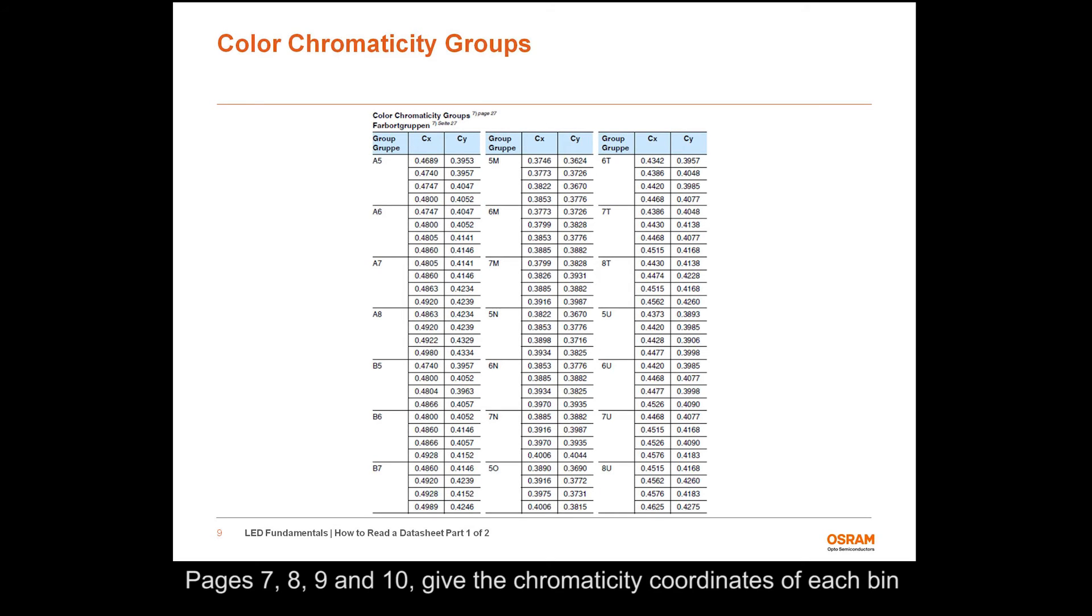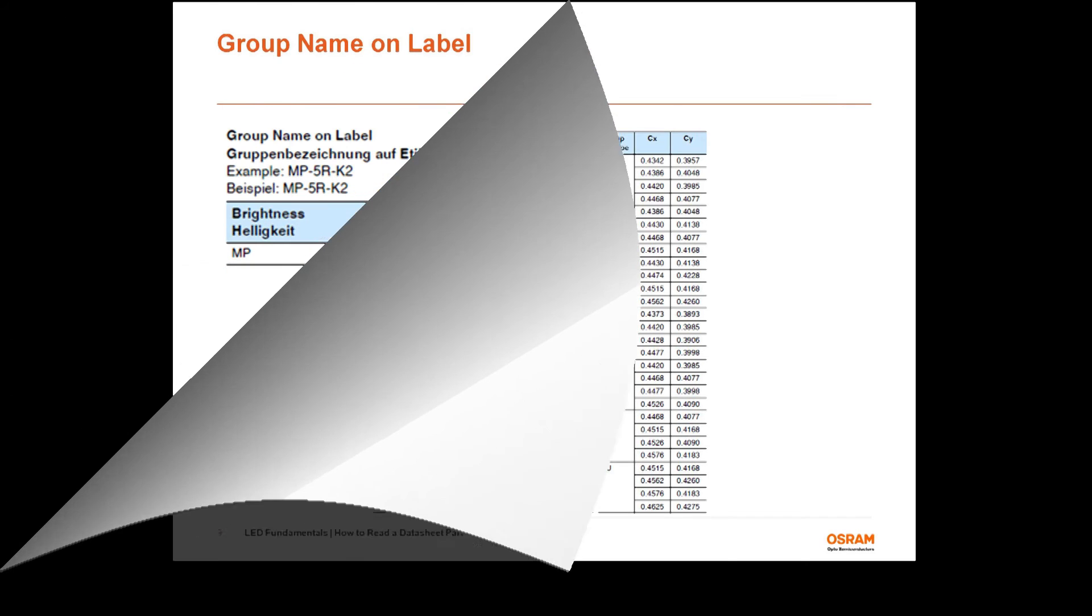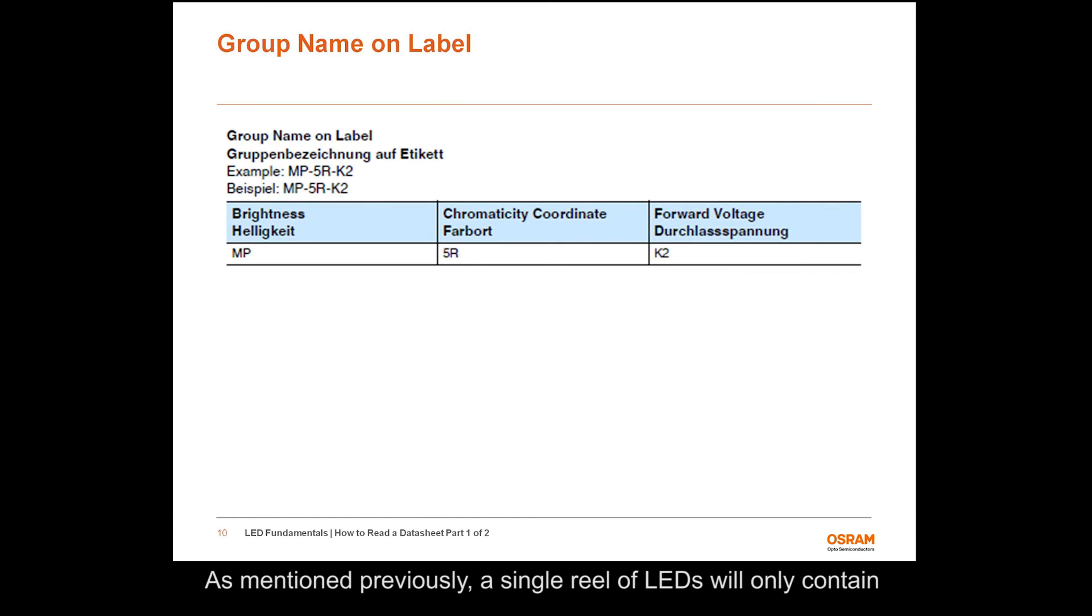Pages 7, 8, 9, and 10 give the chromaticity coordinates of each bin shown in page 6. The chromaticity coordinates listed represent the corner points for each bin on the CIE 1931 XY chart. As mentioned previously, a single reel of LEDs will only contain one type of each bin. Page 11 shows an example of how the bin names would appear on the label. This reel of LEDs will only have the MP brightness bin, the 5R chromaticity coordinate bin, and the K2 forward voltage bin. The label on the packaging will clearly indicate this information to the user.